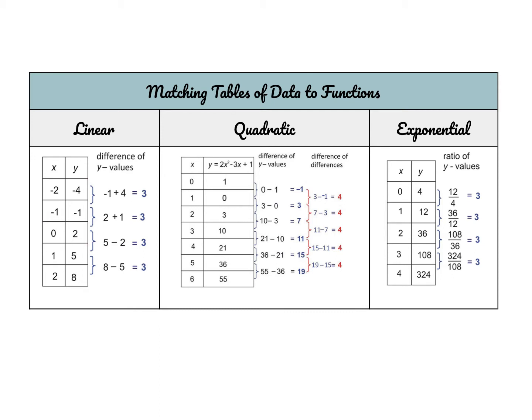Today we're going to be working with different types of data. Sometimes data is represented with a table of values, and sometimes you'll see a scatter plot with different data sets as coordinates. It's important that we know how to look at different forms of data and identify what type of model would be the best fit.